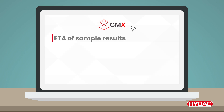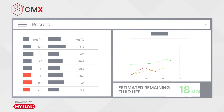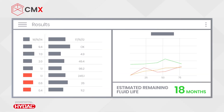A question can also be included in this email asking if you require any additional laboratory analysis or have any comments. Once the analysis is complete, the CMX laboratory portal will give a red, amber or green indication against each result, depending on whether they are close to or have exceeded the machine's acceptable limits.